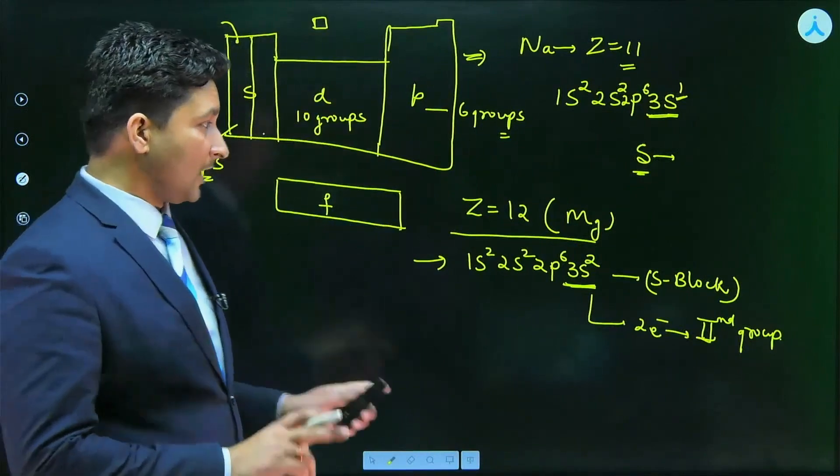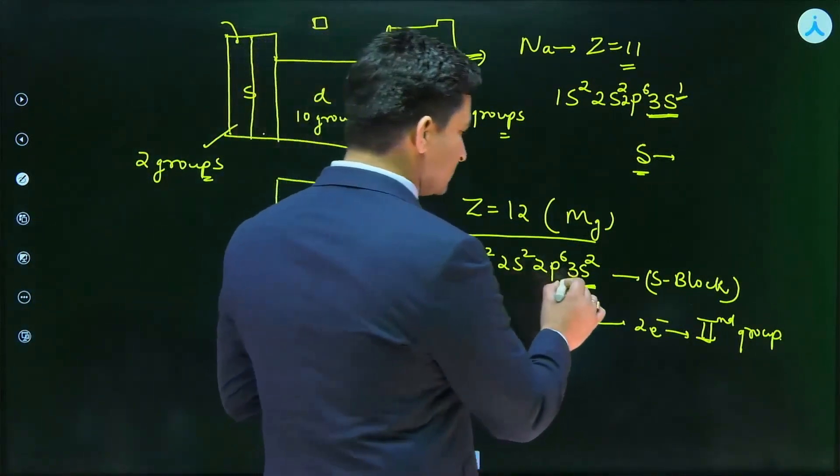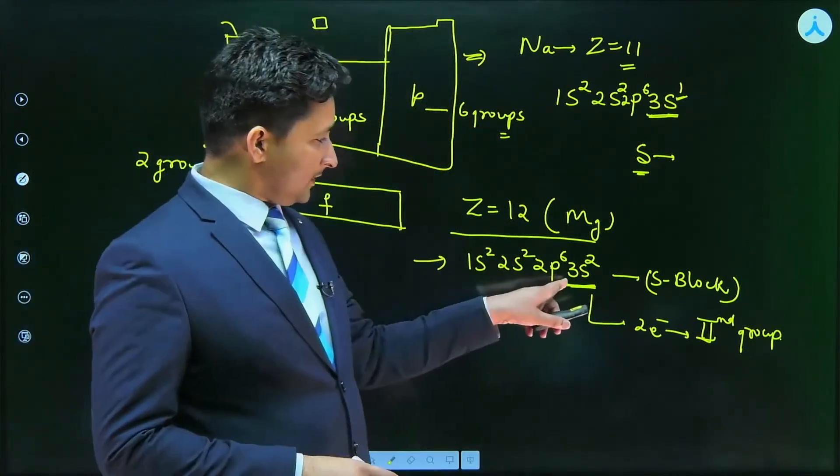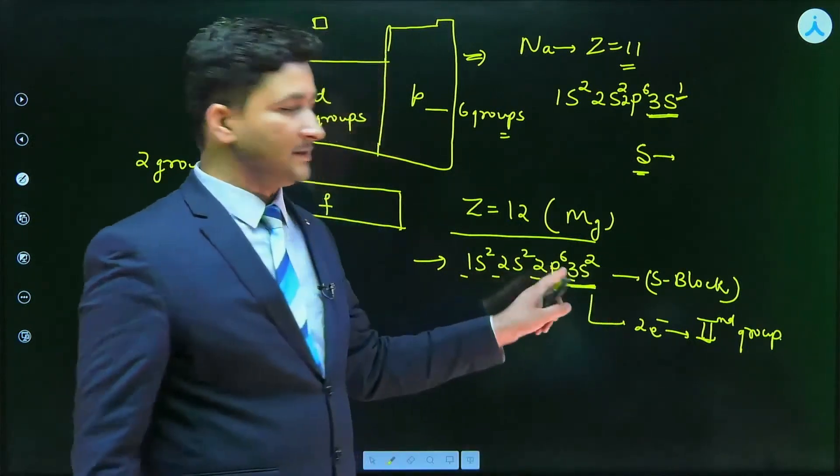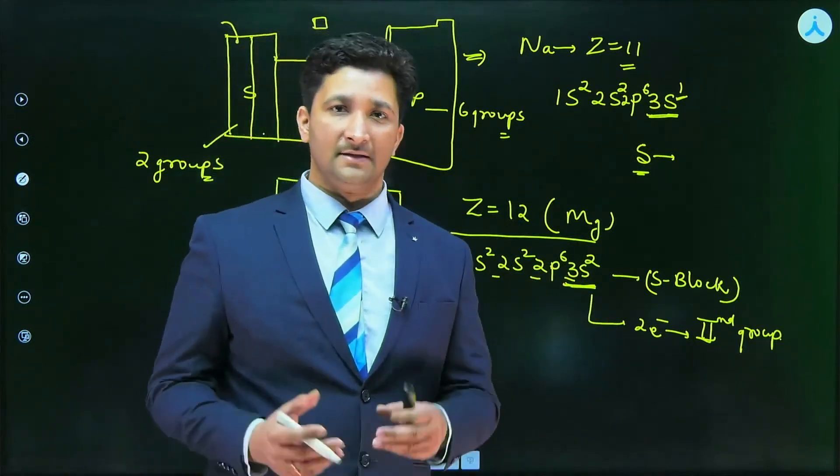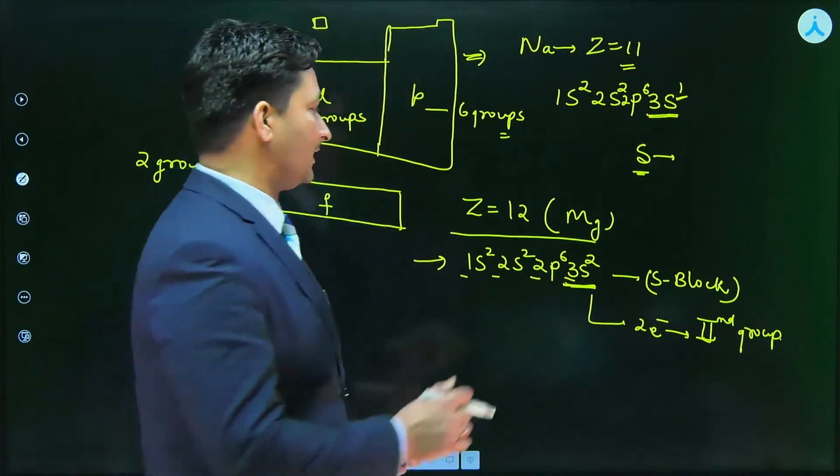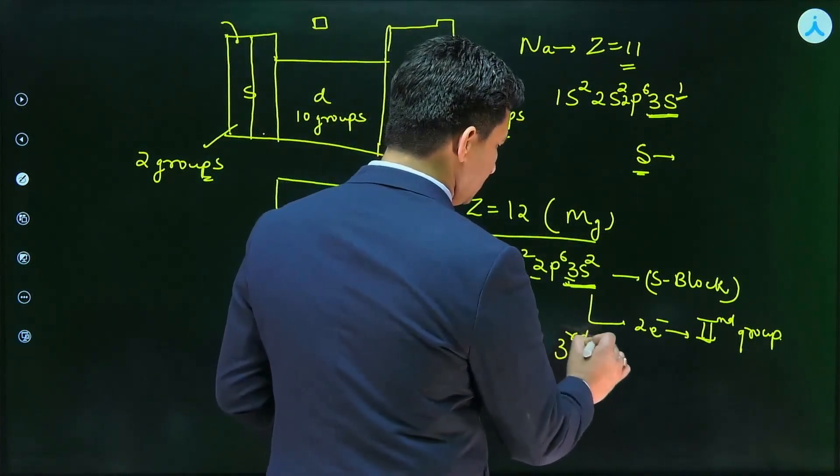Is this clear? Now, how can we identify periods? Periods actually represent the maximum value of n in the electronic configuration. You just have to see that 1, 2, 2, 3—this 3 is the maximum value of n and this corresponds to the period in which that element lies. So it actually lies in third period. Magnesium is lying in third period.